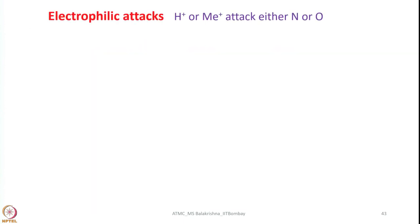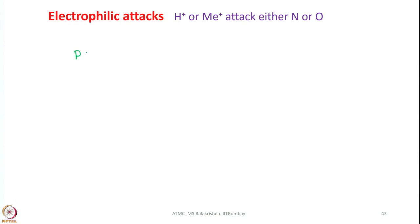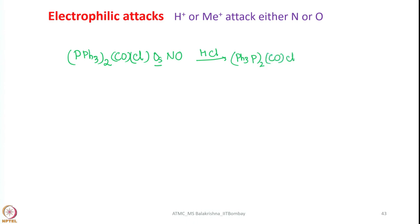Now let us look into the electrophilic attacks. For example, consider H⁺ or Me⁺. They can attack either N or O on a coordinated nitrosyl ligand. Let us look into both cases. This is an osmium complex, and treatment of this one with HCl forms a compound of this type. Now you know H⁺ has attacked N.